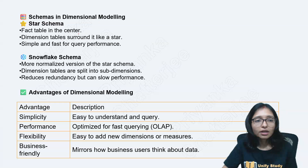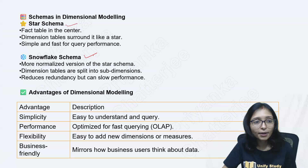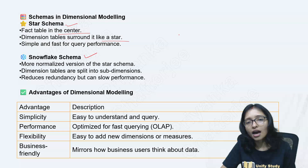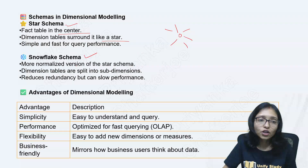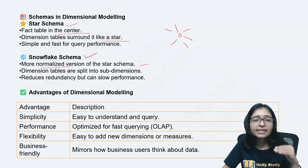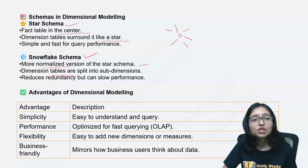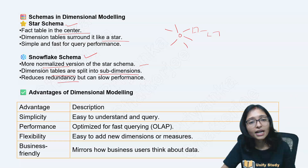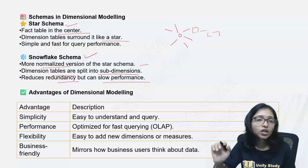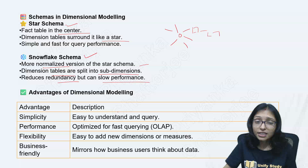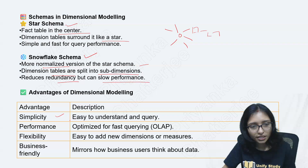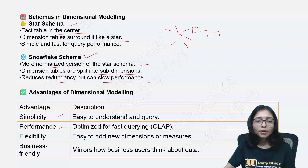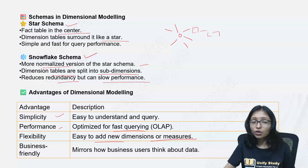Dimensional modeling schemas are normally the star schema and snowflake schema. In the star schema, you can see the fact table in the center and dimension tables surrounding it like a star. The snowflake schema is a more normalized version of the star schema — it is a little updated. Dimension tables are split into sub-dimensions, which reduces redundancy but can slow performance. Advantages of dimensional modeling include simplicity, good performance due to optimization, flexibility to add new dimensions, and it is business friendly.